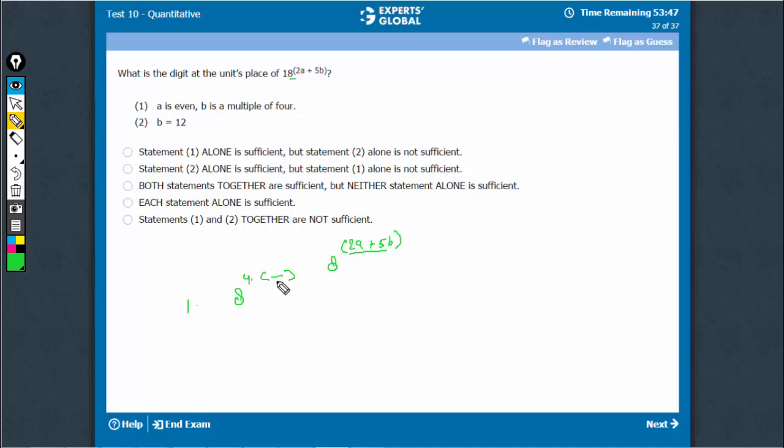If it is a raised to power, a multiple of 4, then remember to find the last digit, what we do is we divide the power by 4 to find the remainder. Okay, when you do it here, the remainder would be 0.